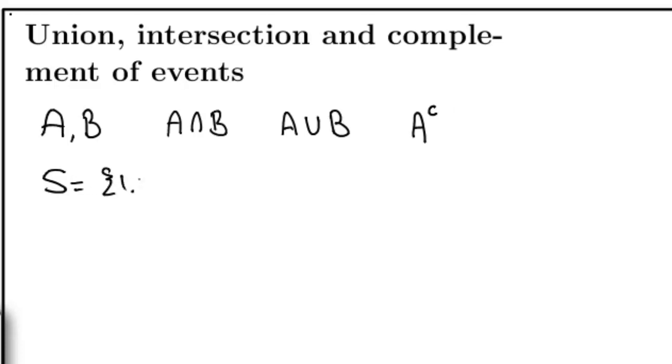So for example, if my master set is 1, 2, 3, 4, my A is 1, 2, my B is 2, 3, the intersection of A and B would be just 2. This element is in both A and B.